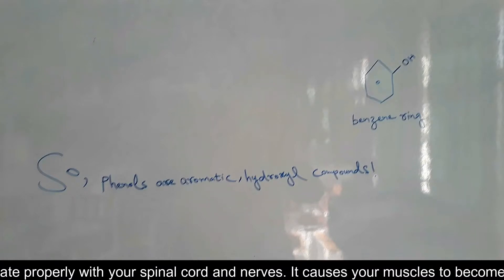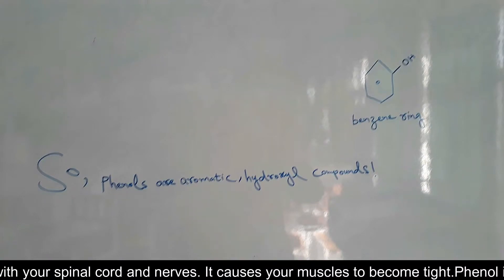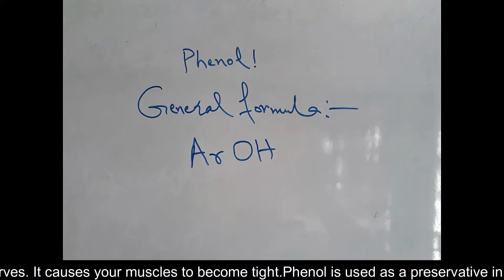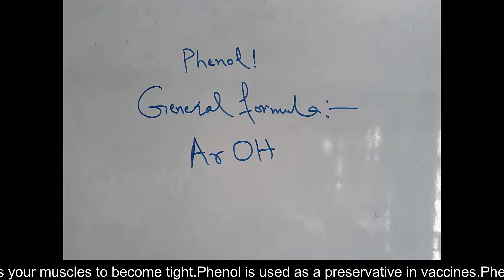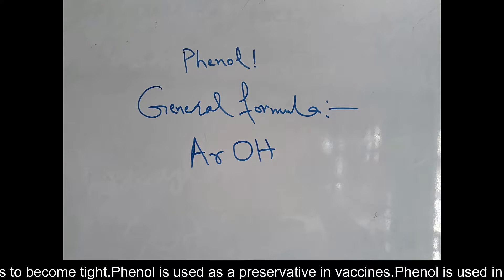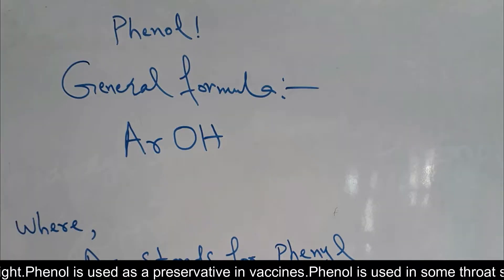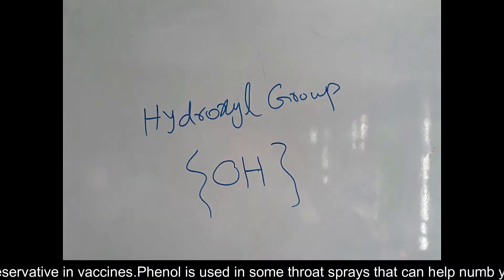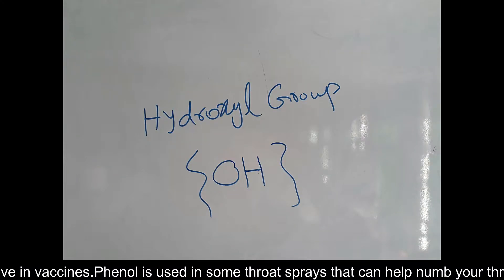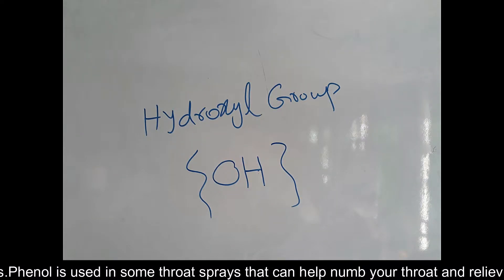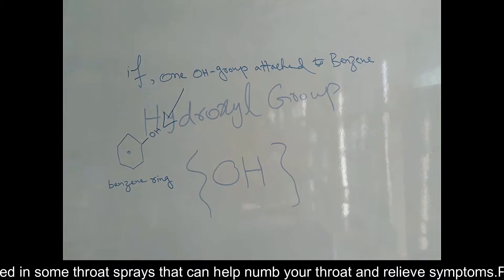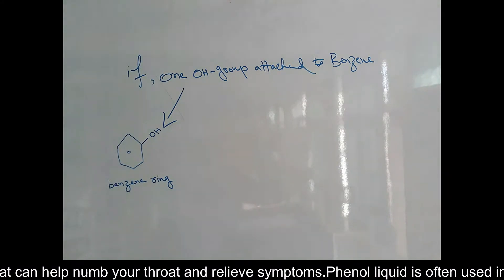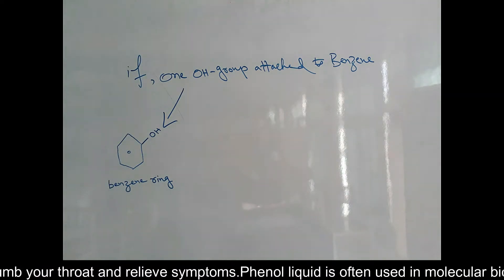Phenols are basically aromatic hydroxyl compounds. Now, quickly, the general formula for phenol — here AR stands for the aromatic ring and OH stands for the hydroxyl group. Phenols are basically classified into three groups.